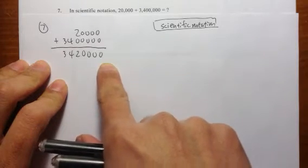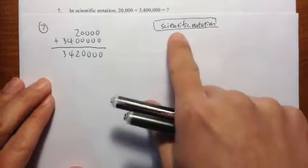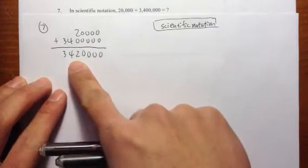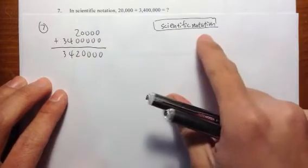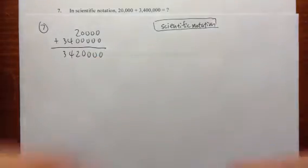This is 3,420,000, right? And you don't want to just keep writing this number over and over again. Scientific notation is just an easier way to represent big numbers.